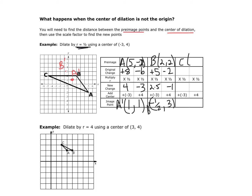Now we'll do point C, at (−5, 2). The distance from the center: −5 minus −3 = −2 in x, and 2 minus 4 = −2 in y. Multiply both by 1/2 to get −1 and −1. Then adding the center coordinates: −1 + (−3) = −4 and −1 + 4 = 3. So C prime is at (−4, 3). That gives us our image and preimage.